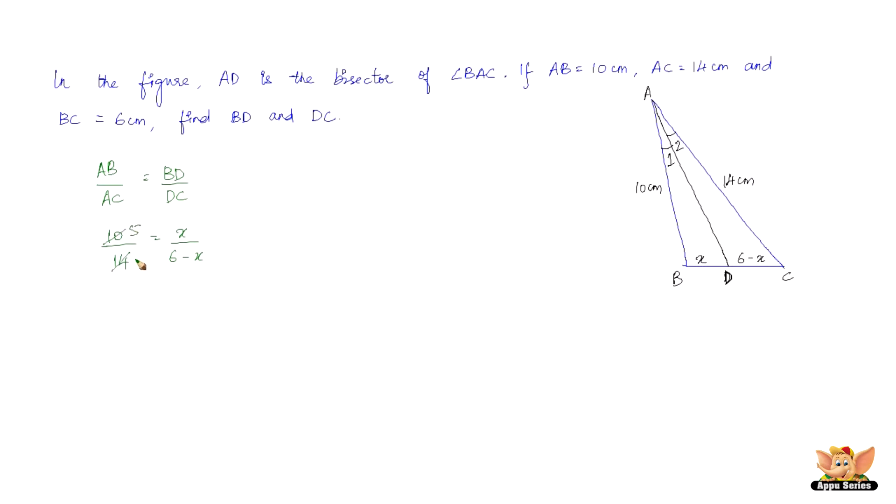First let's strike this out 2, 5 times 2, 7 times. So we've got 5 by 7 equals X by 6 minus X, which is nothing but 5 times into 6 minus X equals 7 times X. So this is 5 times 6 is 30 minus 5X.